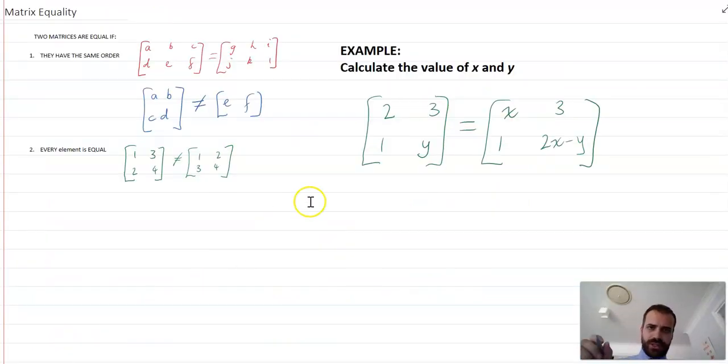All that was really obvious, but now we've got these two matrices here we want to calculate the values of x and y. Now it's pretty straightforward because we've got this x sitting here and it's corresponding with this element in an equal matrix, so we can say therefore x equals two.